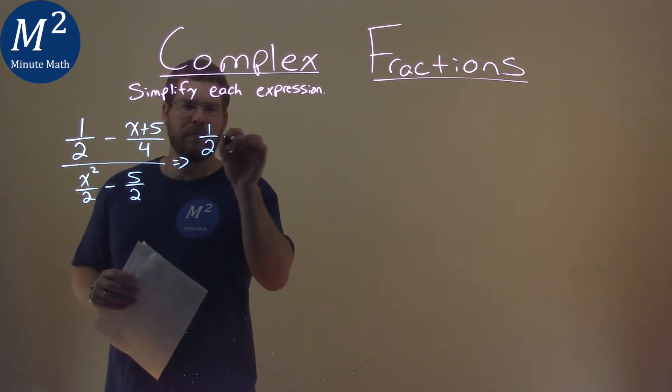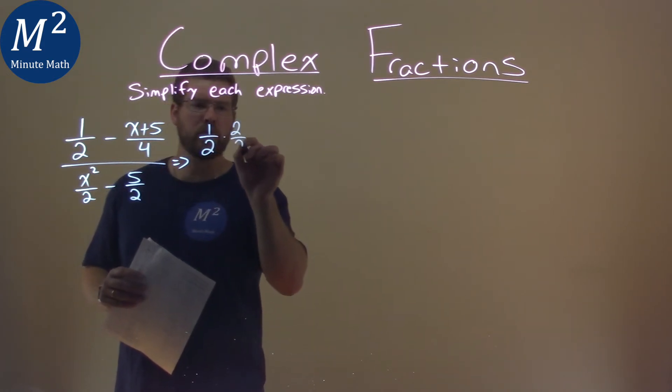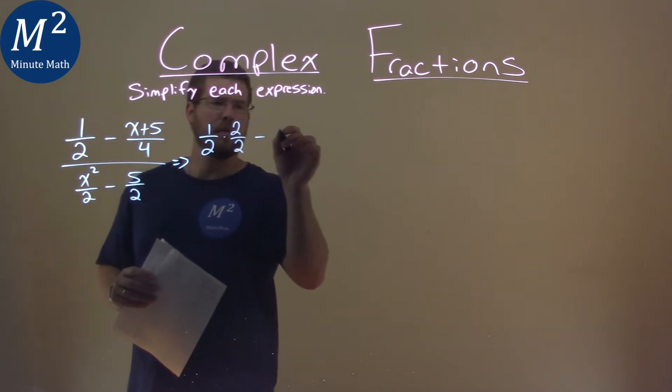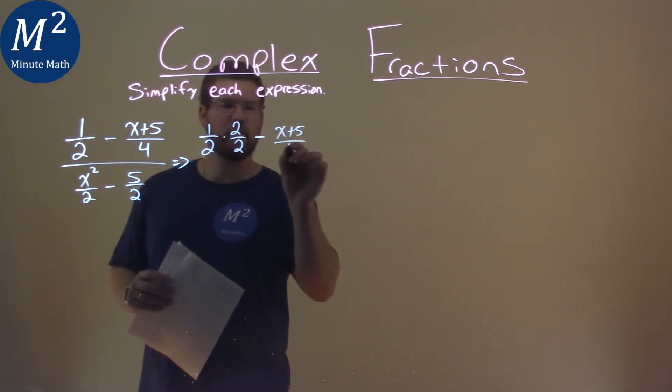If I take that 1 half and multiply it by 2 over 2, this denominator becomes a 4, doesn't it? And then we have an x plus 5 over 4 there.